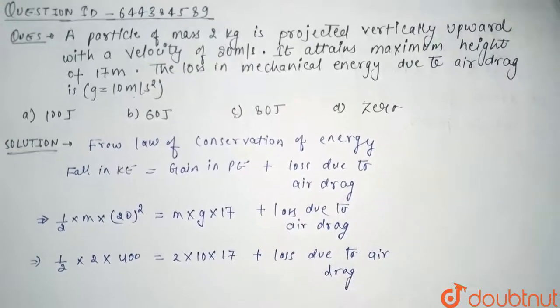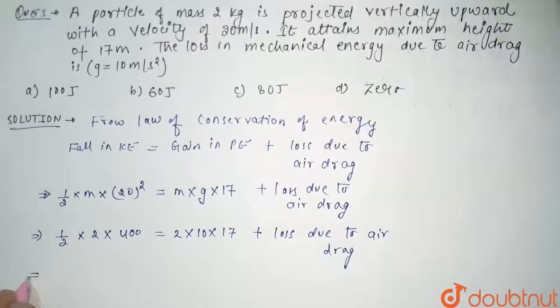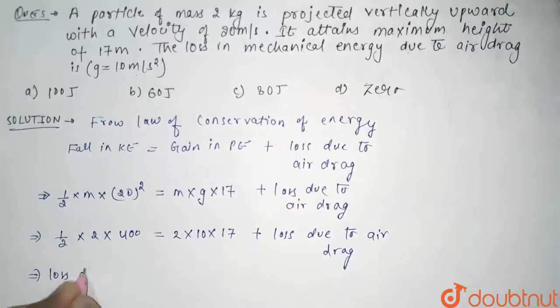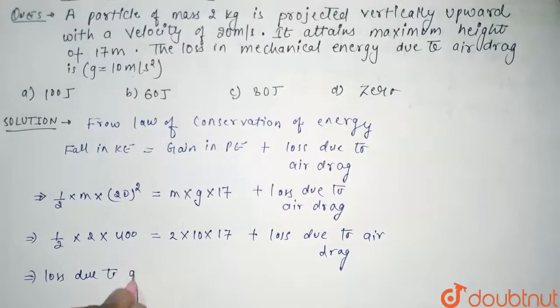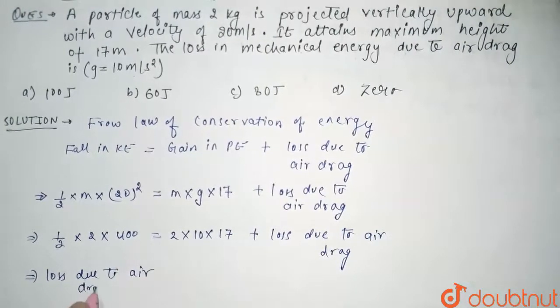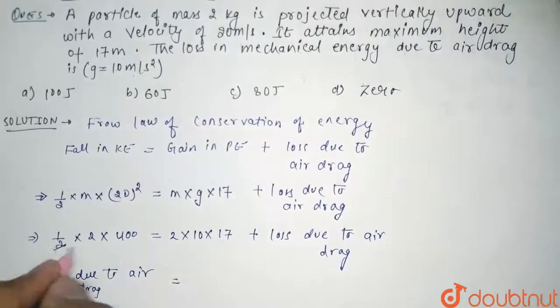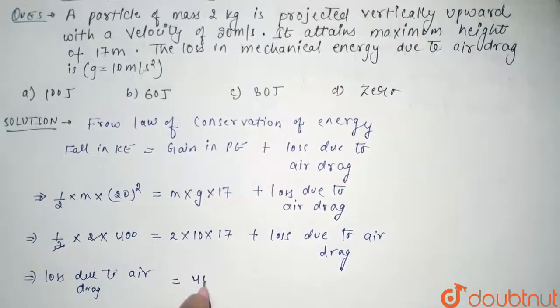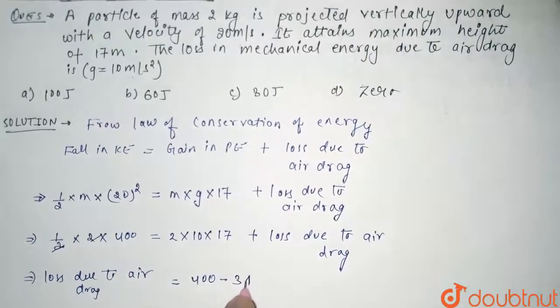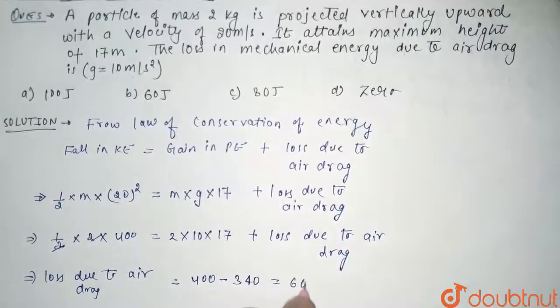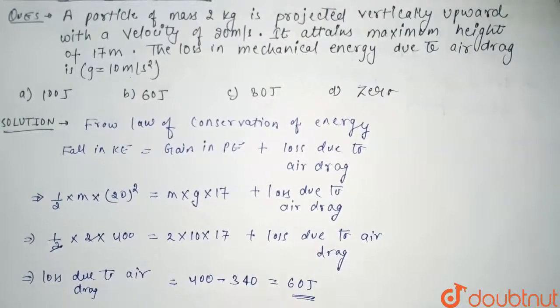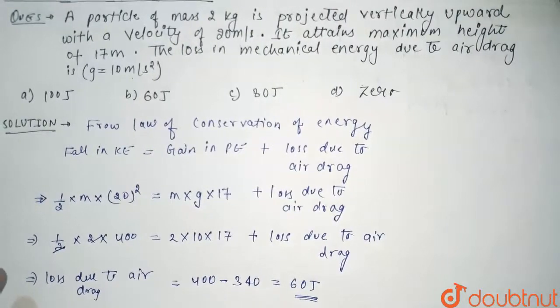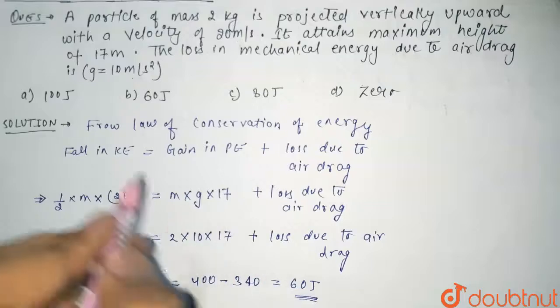So from here, loss due to air drag comes out to be: this 2 and 2 will cancel, and this comes out to be 400 minus 340, which comes out to be 60 joules. So the loss in mechanical energy due to air drag is 60 joules. So correct option is option B. Thank you guys.